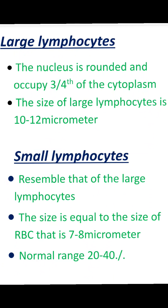This is the small lymphocyte. It resembles the structure of the large lymphocyte, but the size is equal to the size of an RBC — approximately 7 to 8 micrometers. The size of an RBC is 7.2 micrometers.